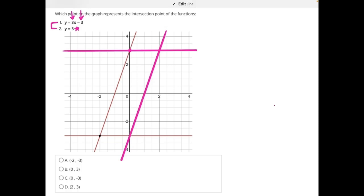So that means the intersection of our two graphs is right here, which follows 2 up 3, so 2 comma 3, making d our correct answer.